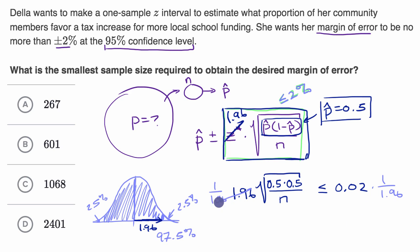On the left-hand side, we'd have the square root of all of this. That's the same thing as the square root of 0.5 times 0.5, so that would just be 0.5 over the square root of n.